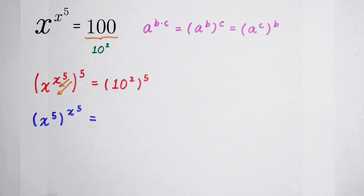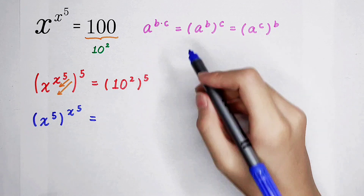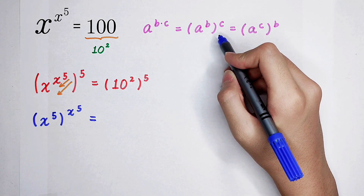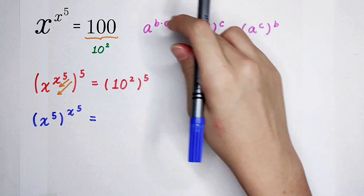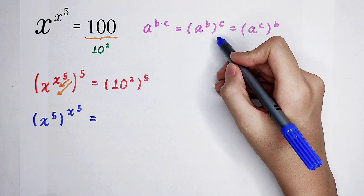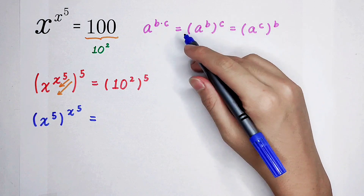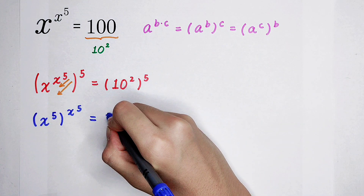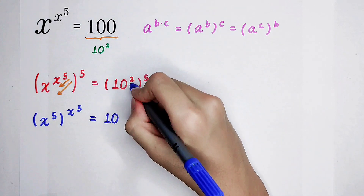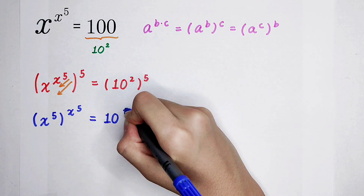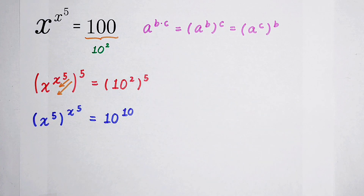The right-hand side: 10 to the power of 2, then all to the power of 5, is also the form a to the power of b, all to the power of c. We have to use this formula — it equals 10 to the power of b times c, which is 2 times 5, it is 10. So now you can see the base and the exponent also have the same value: 10.